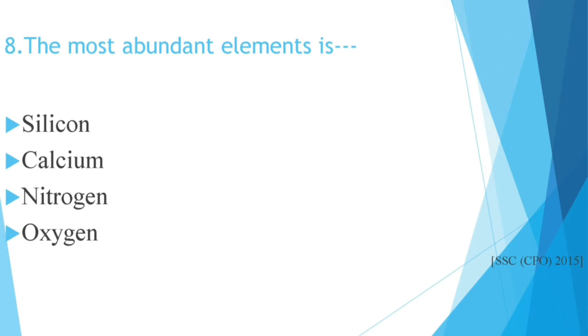Question number 8: The most abundant element is silicon, calcium, nitrogen, or oxygen. Last question we went through the most abundant element on Earth's crust, and this question is the most abundant element. The answer is nitrogen. This question is also in SSC.